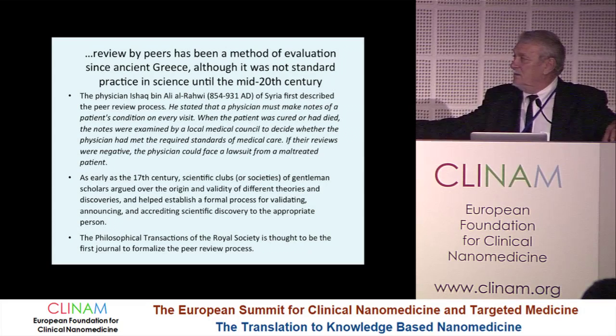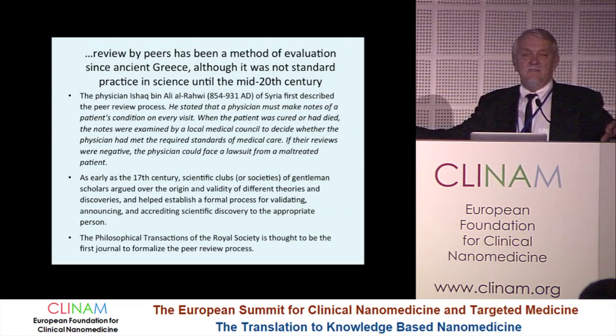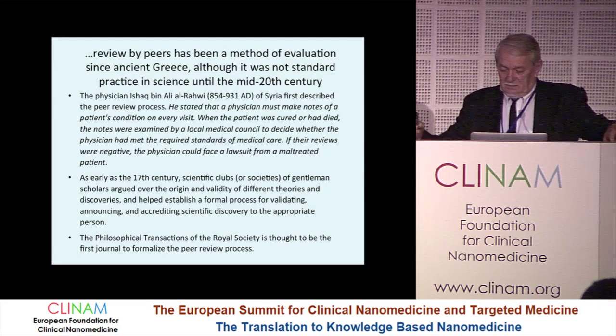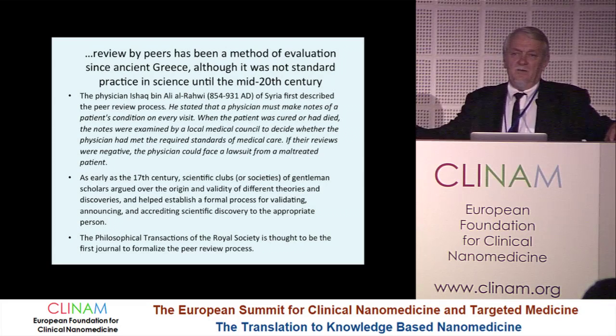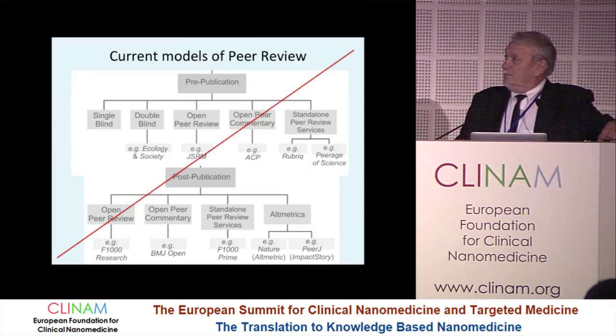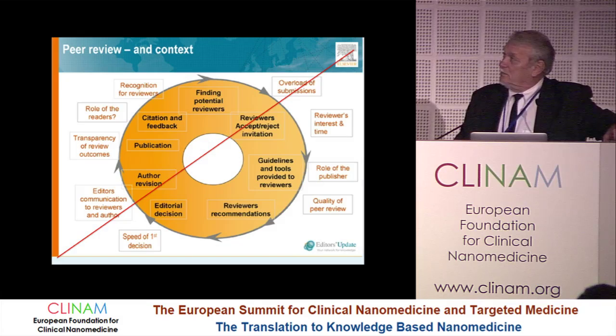The philosophical transactions of the Royal Society started with the very first one around the 1800s. And as early as 1905, the first paper of Einstein was not peer-reviewed — it was just accepted by the two editors, the editor-in-chief and the co-editor. He didn't send it out for peer review. I'm not going to talk about the current methods or the process — you all know that.